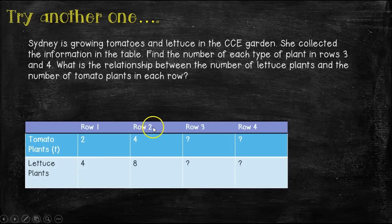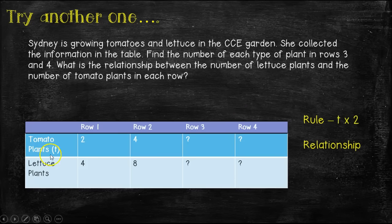Then in row two, she has four tomato plants and eight lettuce plants. Are you starting to see some sort of a pattern? How did we get from two to four? And how did we get from four to eight? So our rule in this case would be T times two. So the tomato plants are T. So how did we get from two to four? Would be T times two is the rule.